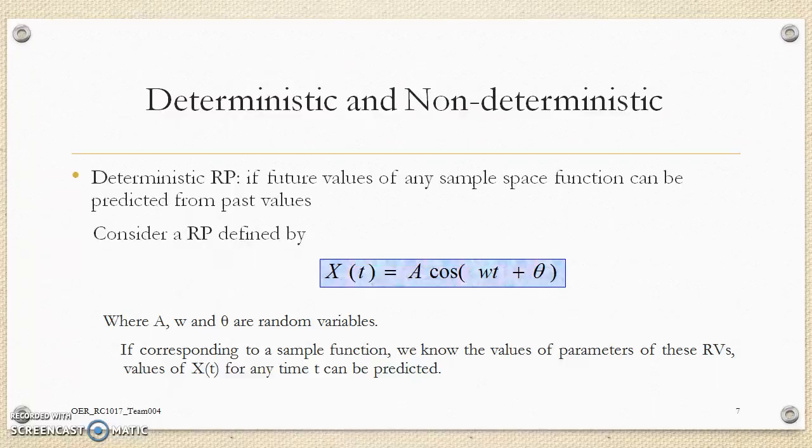X(T) equals A cos(ωT + θ), where A, ω and θ are random variables. If corresponding to a sample function we know the values of parameters of these random variables, values of X(T) for any instant T can be predicted.